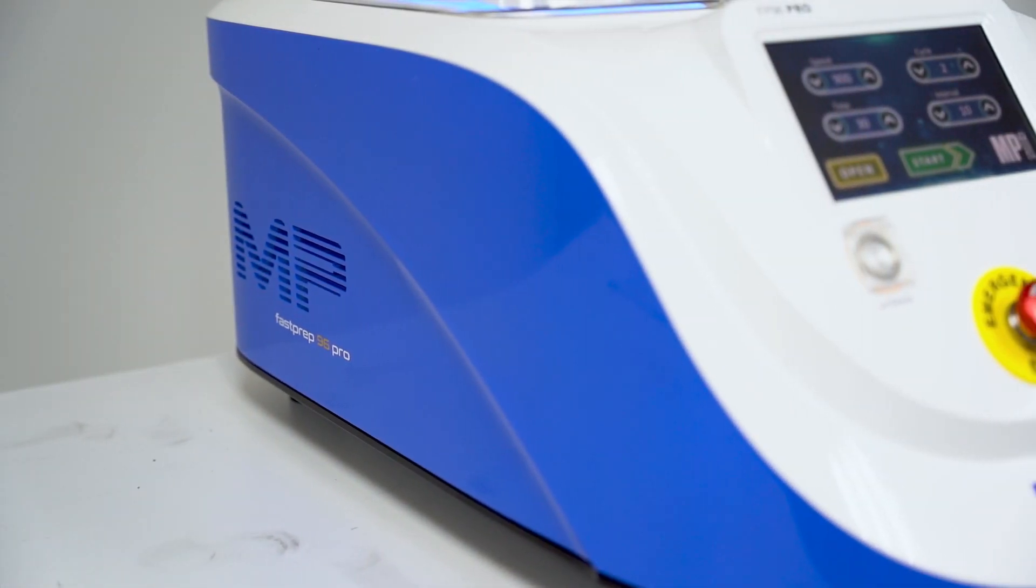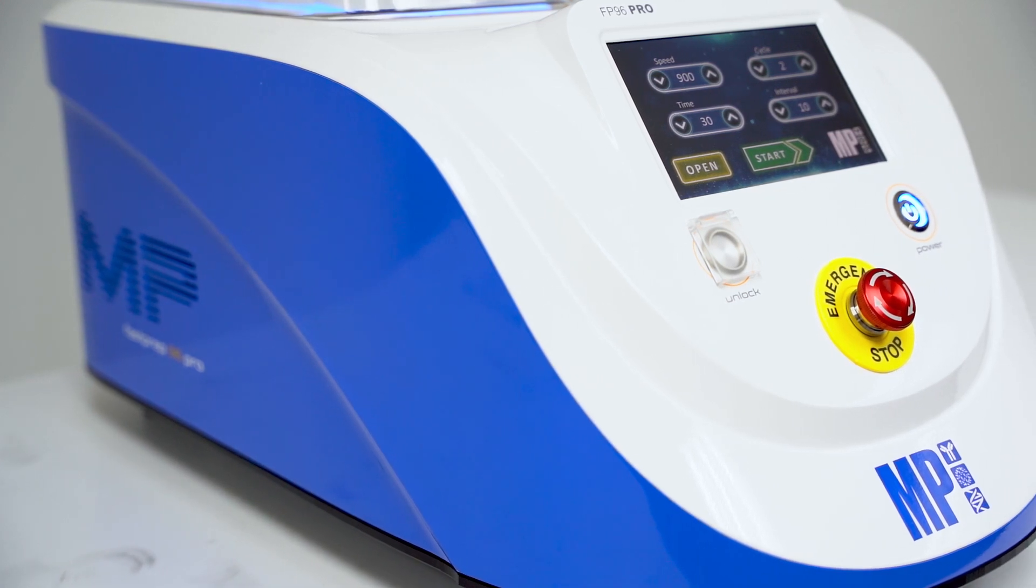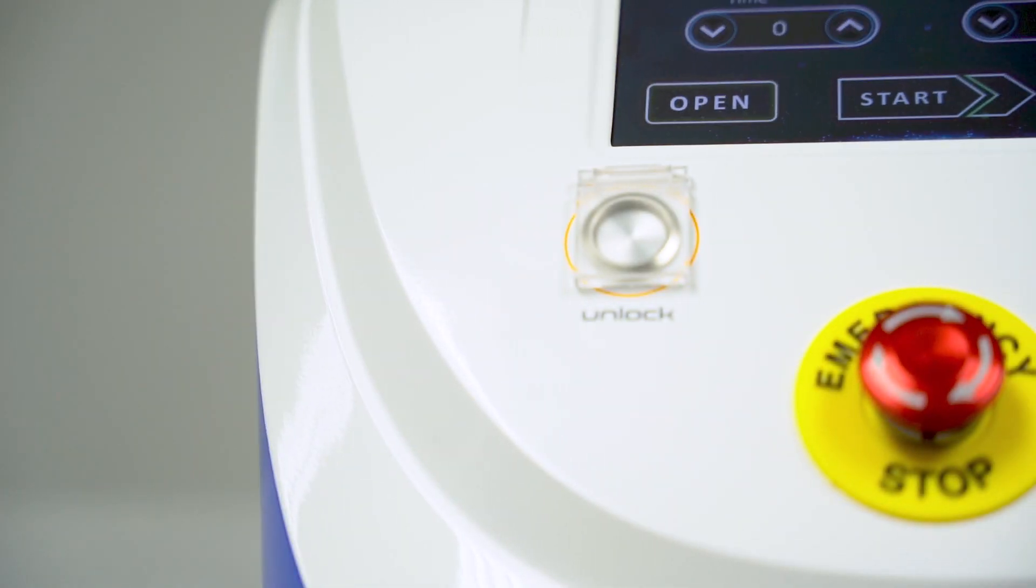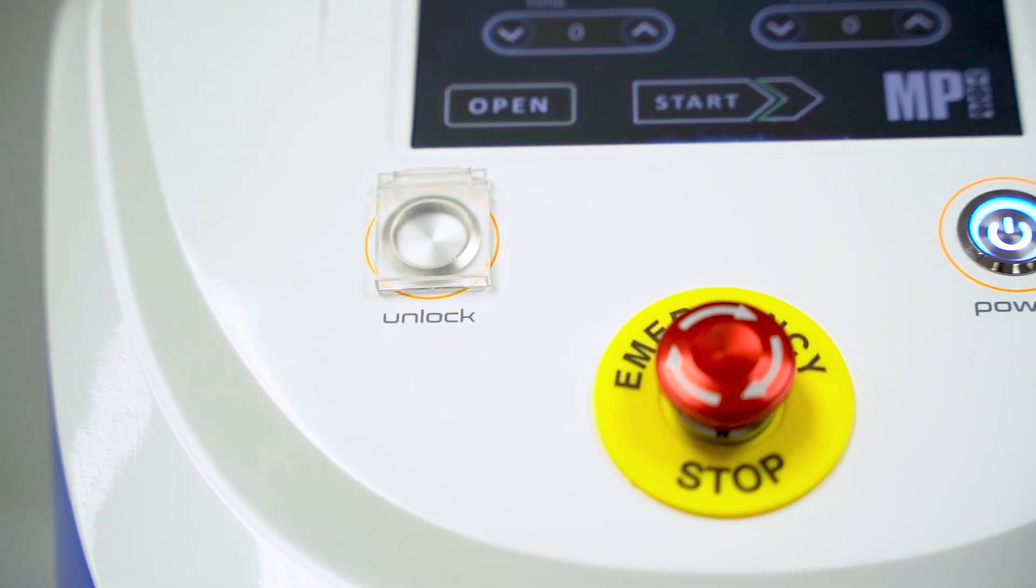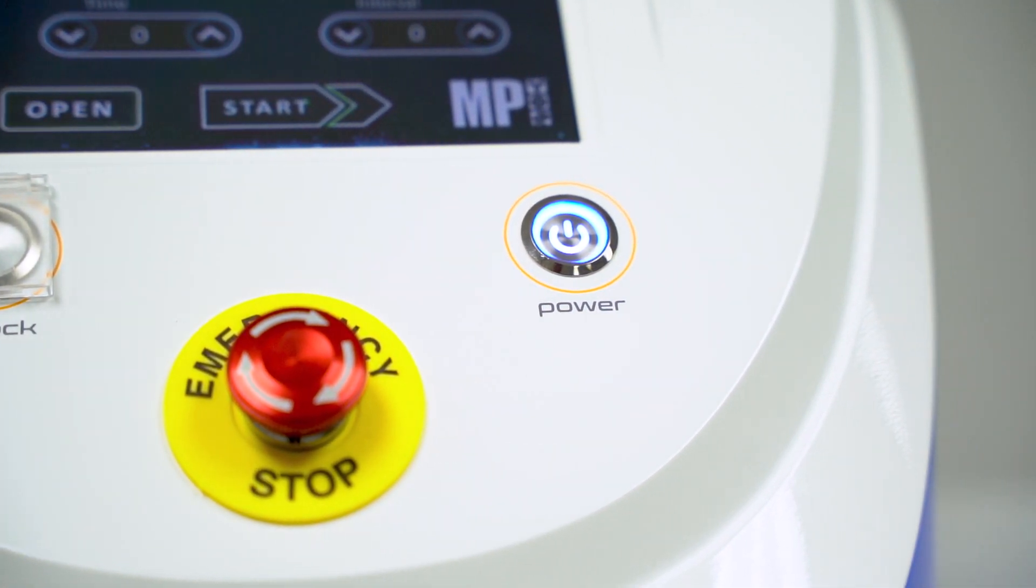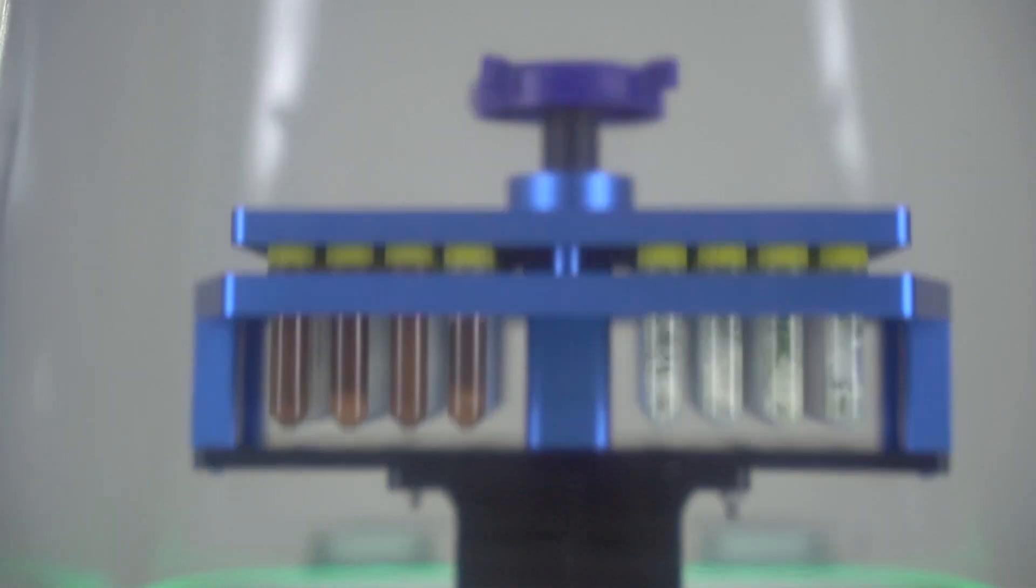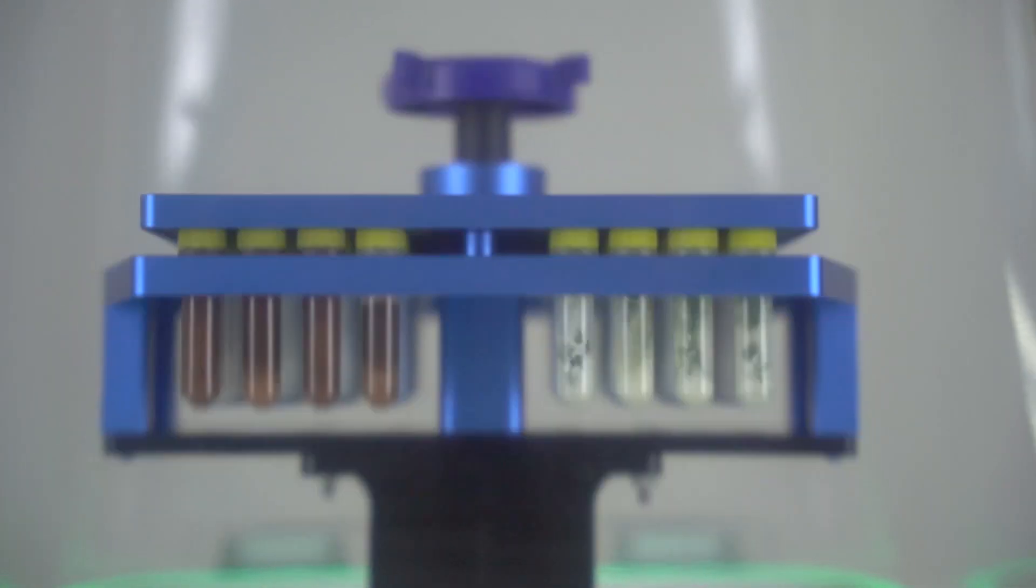Meet the FastPrep 96 PRO, the ultimate high-throughput homogenizer for research sample preparation. With its unique linear motion, the FastPrep 96 PRO can thoroughly homogenize a wide range of sample types in seconds, preserving the integrity of nucleic acids, proteins, and metabolites. When paired with specialized lysing matrix beads, this machine ensures high yields and reliable results.